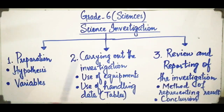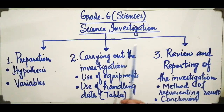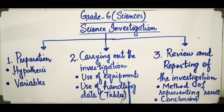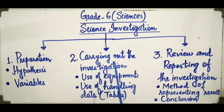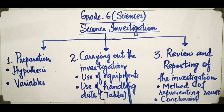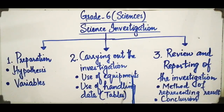Without preparation, you cannot proceed to the next step: carrying out the investigation. The next part of a scientific investigation is carrying out the investigation, which involves the use of equipment — different measuring instruments. As shown in the previous picture, these include a beaker, thermometer, and many other useful instruments which must be chosen properly and appropriately. Using the right equipment, you can measure things like distance, time, weight, area, volume, temperature, and solubility accurately.